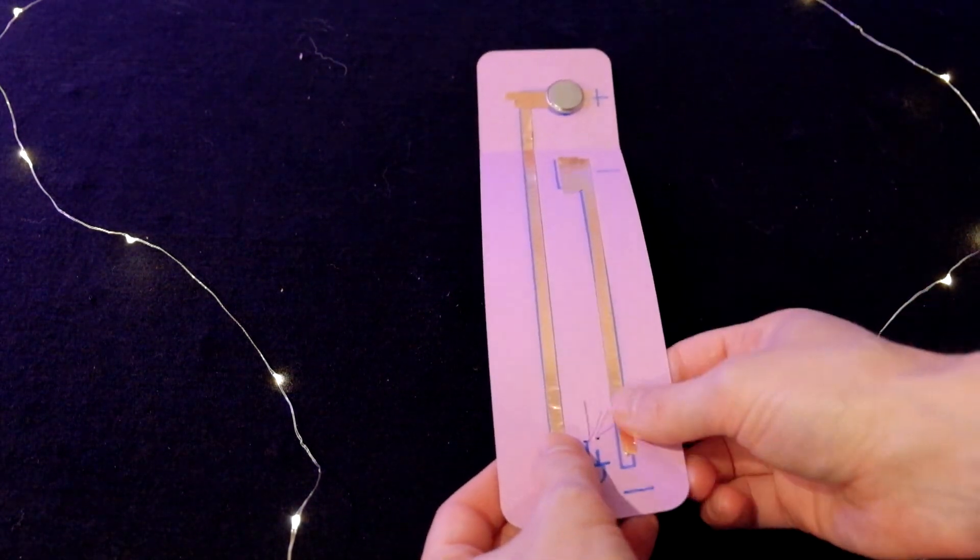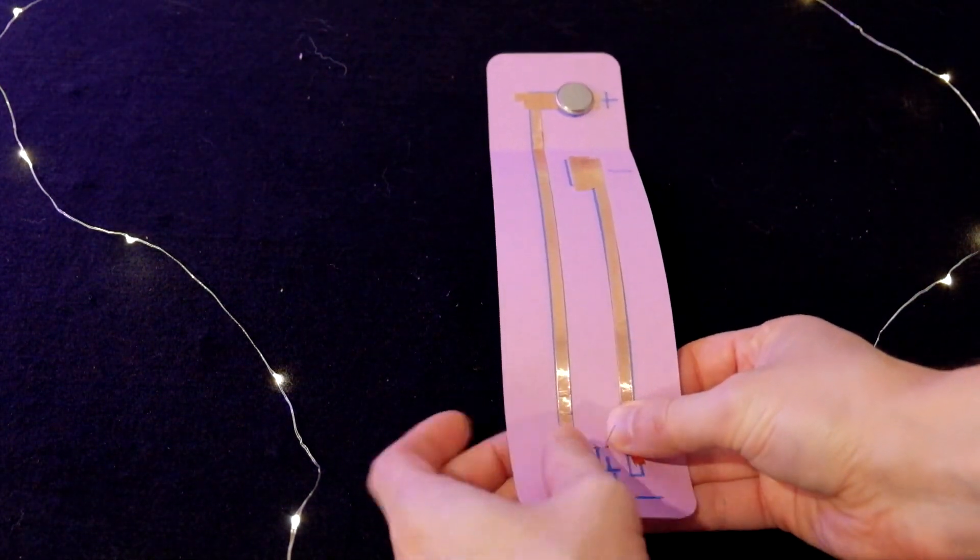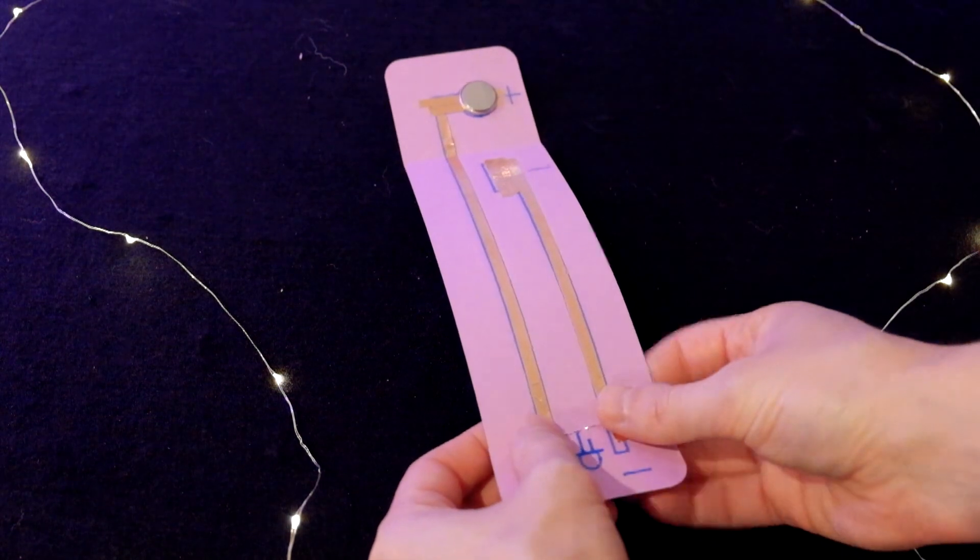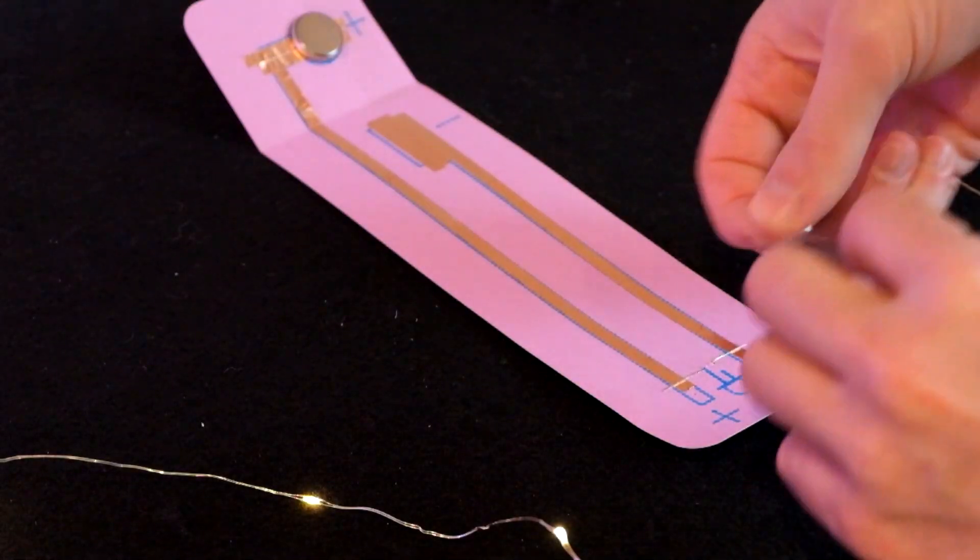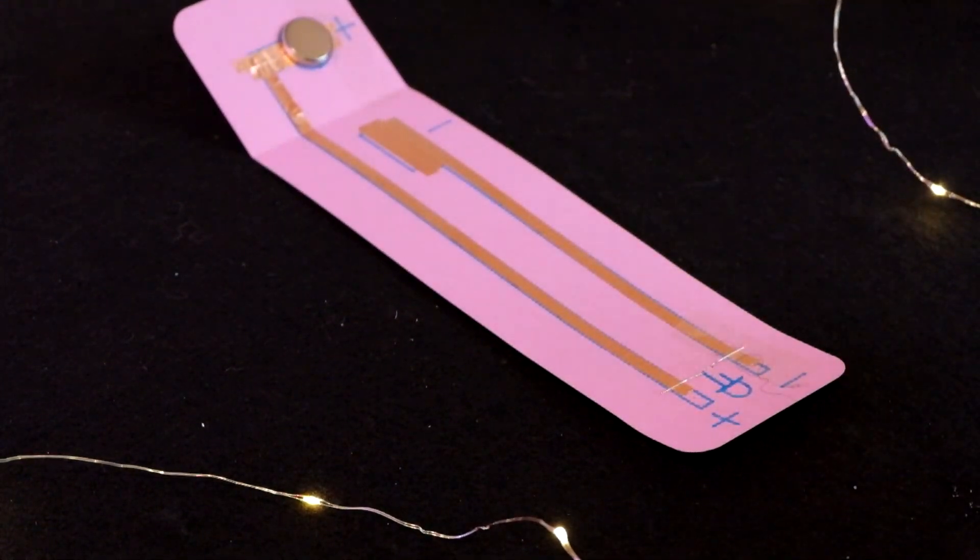Bend the legs out wide so that they're touching the copper tape on each of the sides. Stick the legs down with sticky tape, pressing hard so that they have good contact.